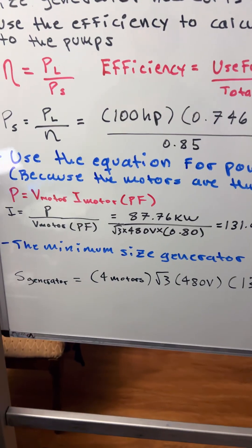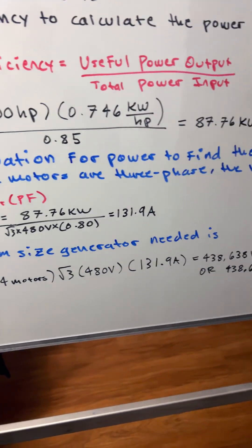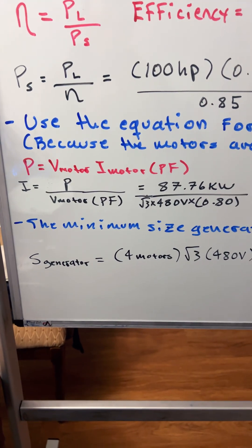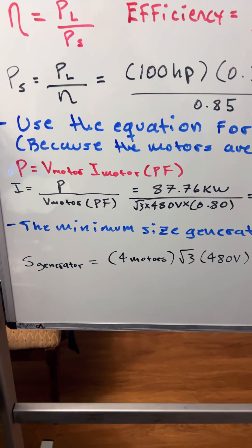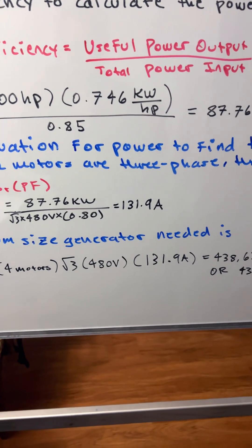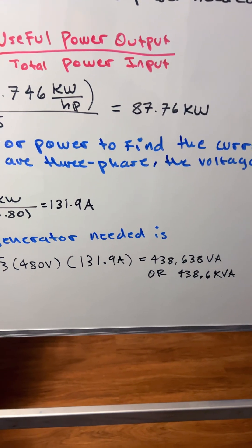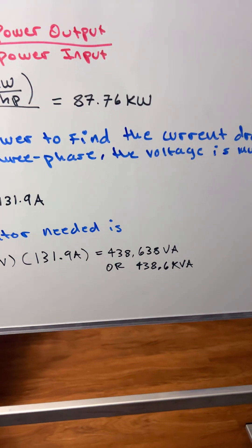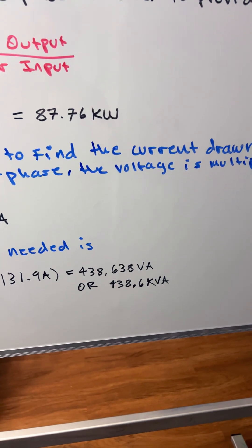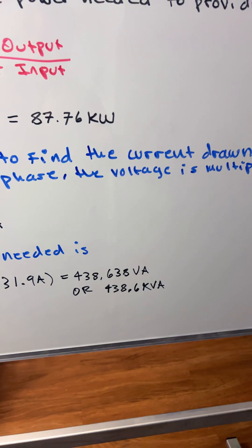The final step is the minimum size generator needed. Here's the generator formula: S generator equals four motors times square root of 3 times 480 times the amperage 131.9 amps, which equals 438,638 VA or 438.6 kVA.